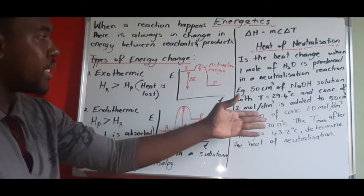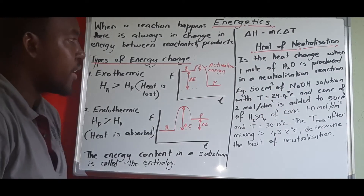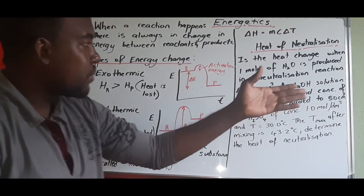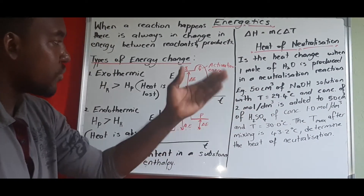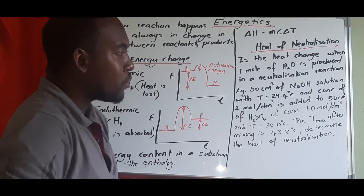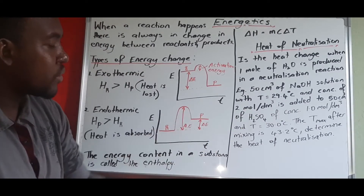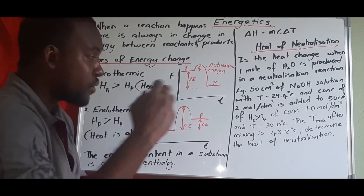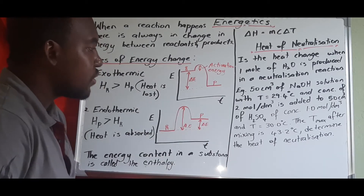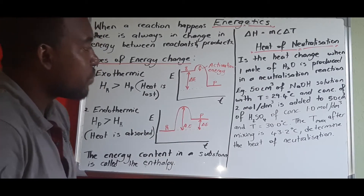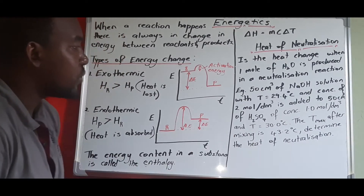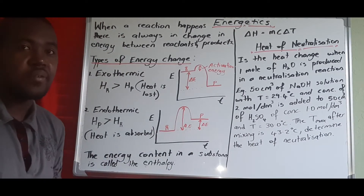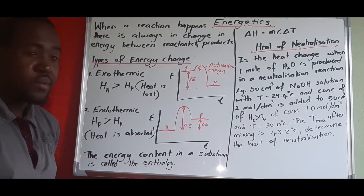Let's look at the example. We have 50 cm³ of sodium hydroxide solution with an initial temperature of 29.4°C and a concentration of 2 mol/dm³, added to 50 cm³ of sulfuric acid with a concentration of 1 mol/dm³ and a temperature of 30°C. The maximum temperature attained after mixing the two solutions is 43.2°C. We need to determine the heat of neutralization.